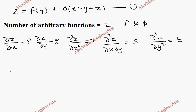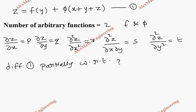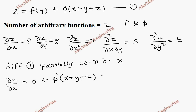Let's take the first expression and differentiate it partially with respect to x. So we get dou z by dou x equal to: f of y is fully constant so it is 0; phi becomes phi dash of x plus y plus z. Then by chain rule, x derivative is 1, y is 0, z is dou z by dou x. This is our second expression.